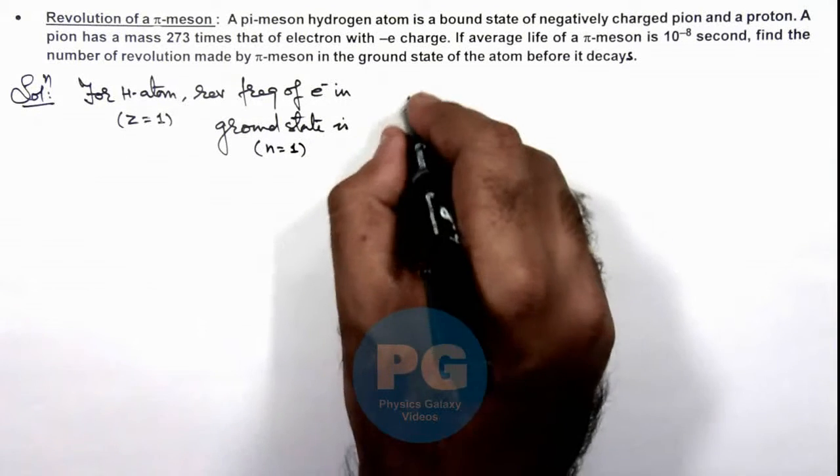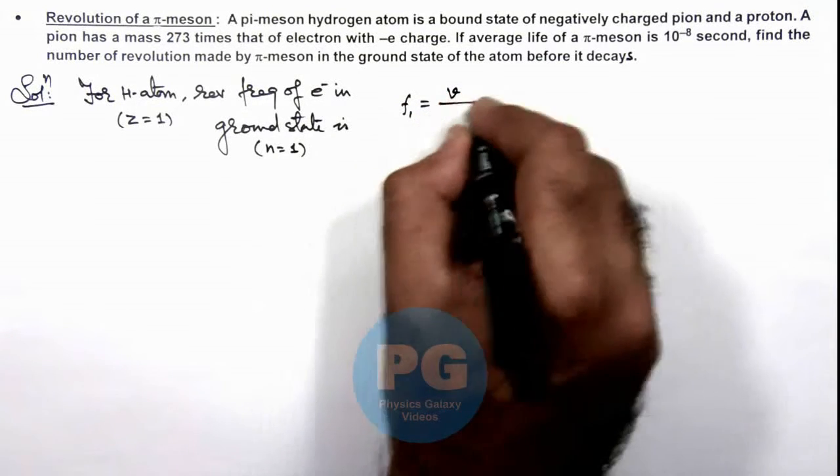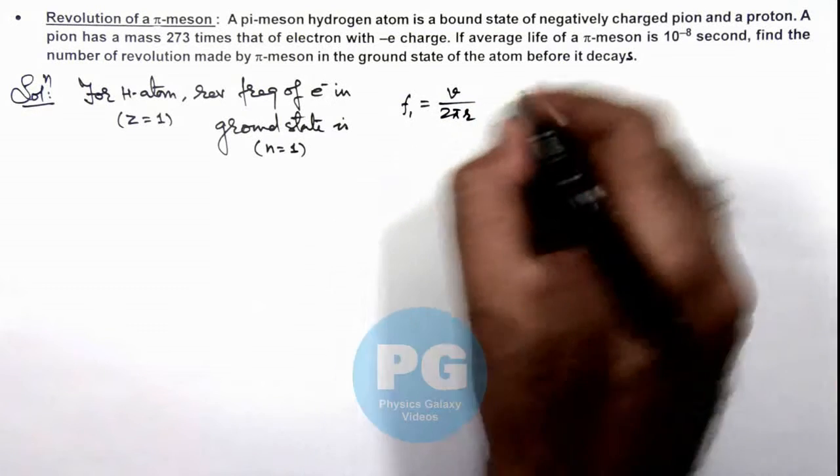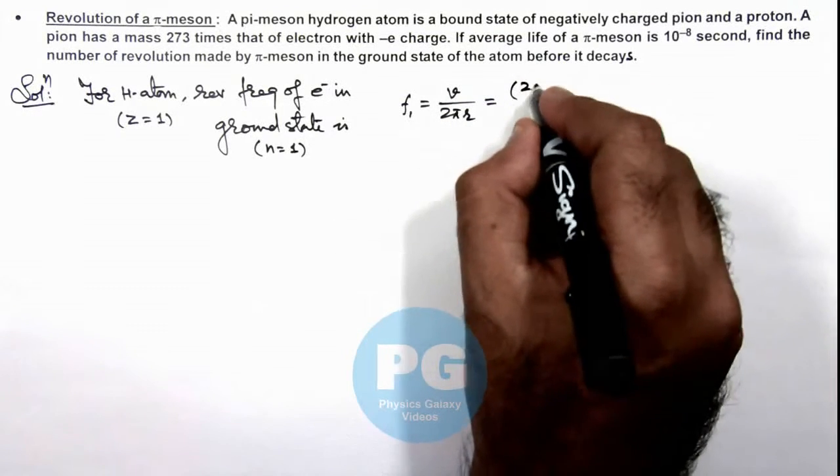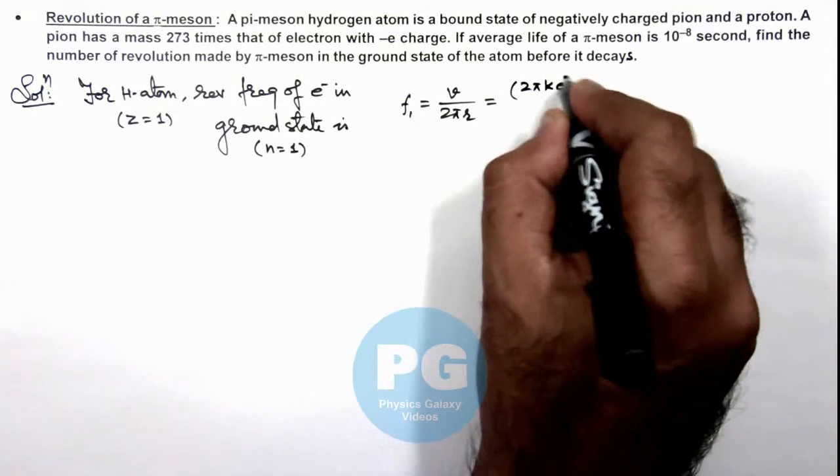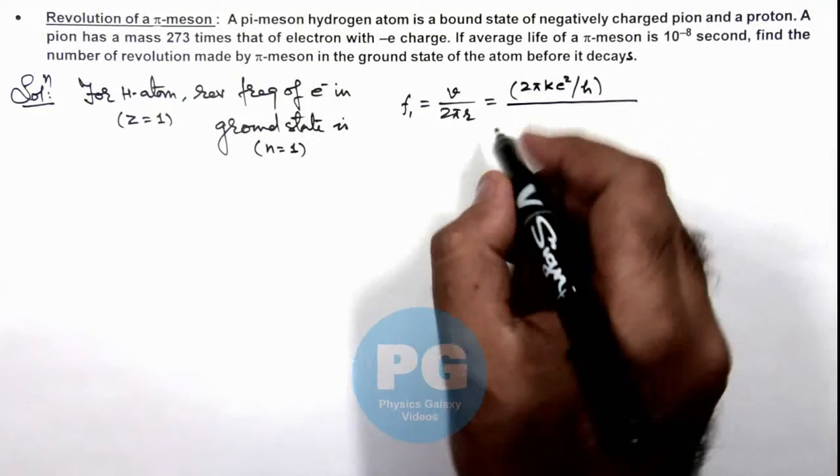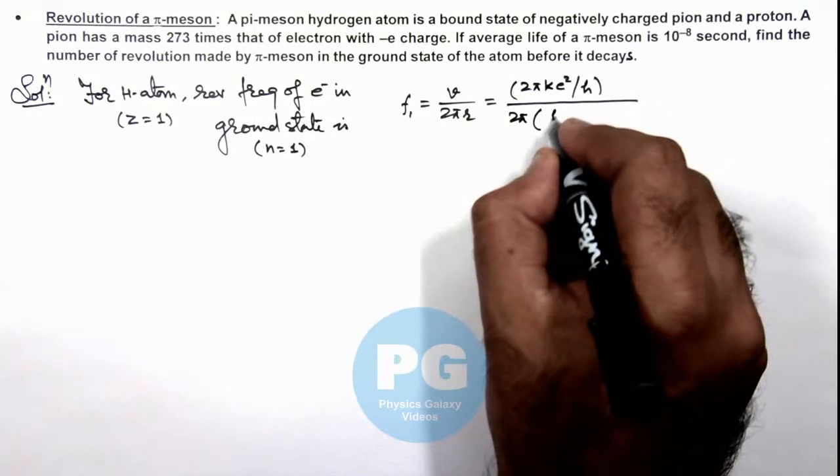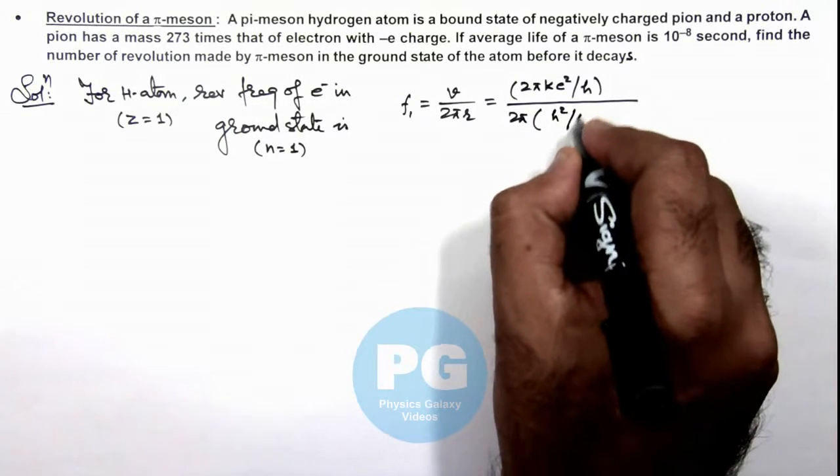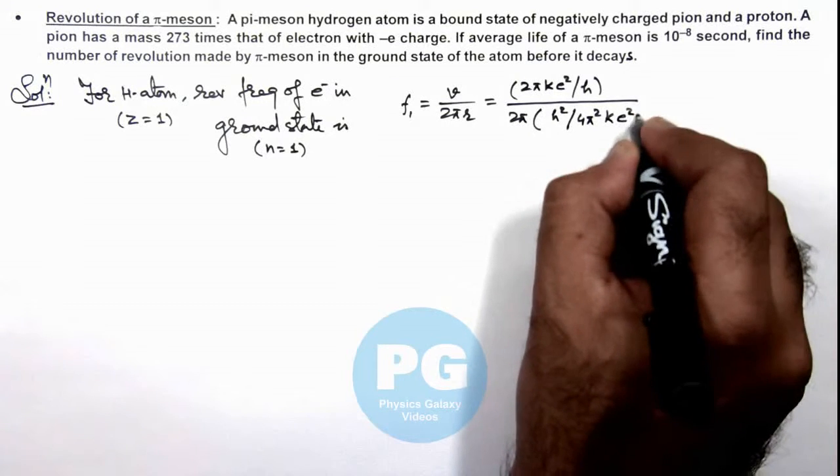So the frequency of revolution in first orbit we can write as v/(2πr). And if we substitute the expressions, v we can write as 2πke²/h divided by the radius of first orbit. Here we can write 2πr as h²/(4π²ke²m_e).